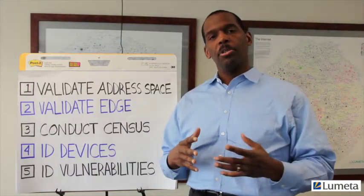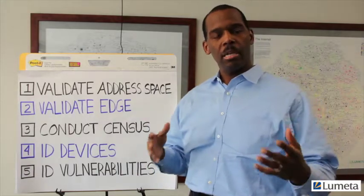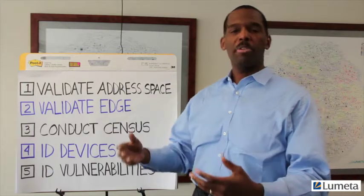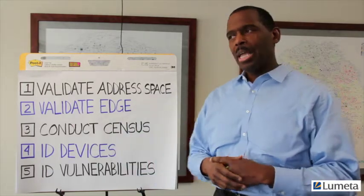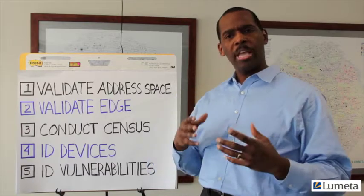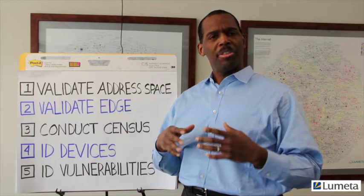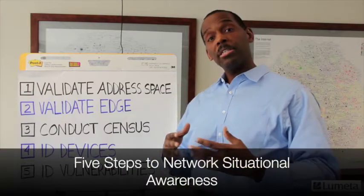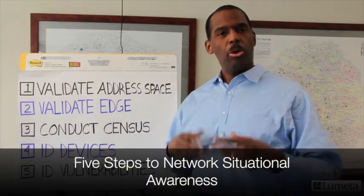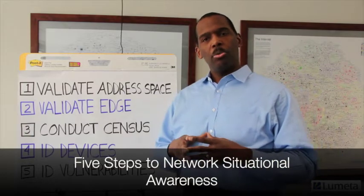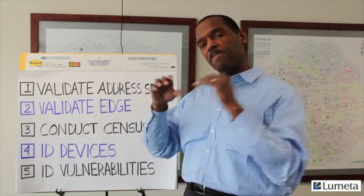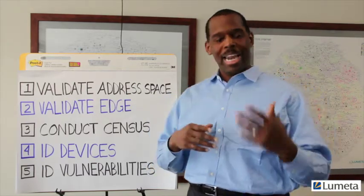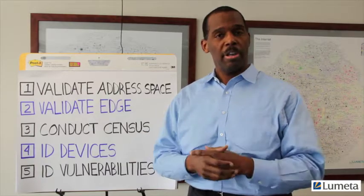Most enterprises don't have any idea about the totality of their network infrastructure. Whether they've got 10,000 IP addresses, 100,000, a million IP addresses or more, typically there are gaps of 10-20% knowledge of their network infrastructure — things that they don't know about. Lumetta's five-step process for network situational awareness is designed to fill those gaps in knowledge to help organizations prevent data exfiltration or breaches of their environment.